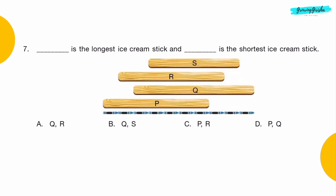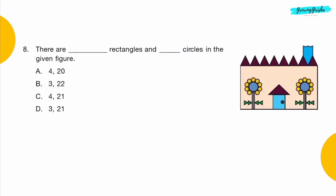Question 7: Dash is the longest ice cream stick and dash is the shortest ice cream stick. Option B: Q, S.